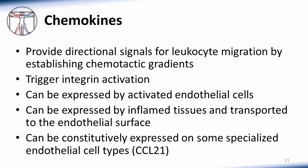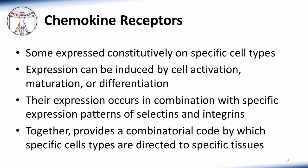Chemokines' expression patterns determine where white blood cells go. They provide directional signals for leukocyte migration by establishing chemotactic gradients, and they trigger integrin activation. They can be expressed by activated endothelial cells, or by inflamed tissues and transported to the endothelial surface. In some cases they are constitutively expressed on specialized endothelial cell types — an example is CCL21, which we will discuss later. The specific patterns of cell migration are also determined by chemokine receptors, whose expression can be induced by cell activation, maturation, or differentiation. Their expression occurs in combination with specific expression patterns of selectins and integrins, and together this provides a combinatorial code by which specific cell types are directed to specific tissues.